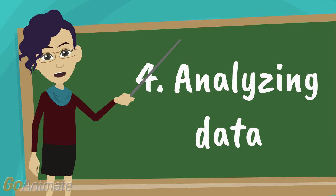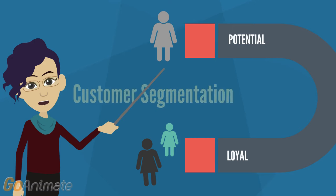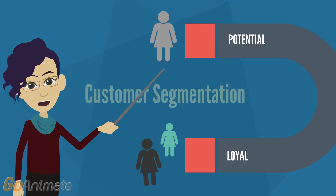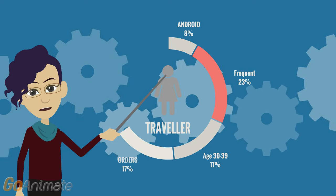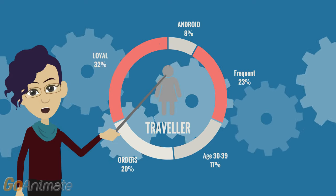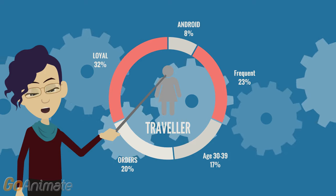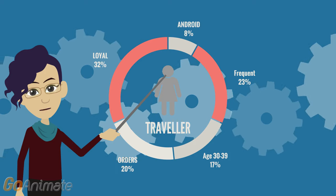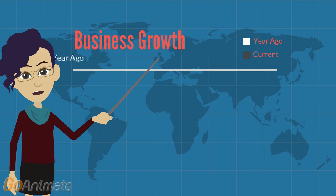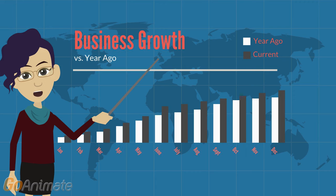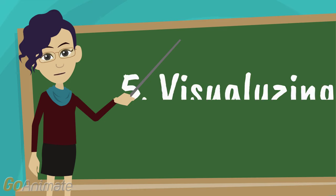After this we come to our fourth step: analyzing data. Using logical methods and analytical techniques, he segmented customers into different groups. Then, further applying some logic, he segmented the potential customers so as to market them on different bases, and also comparing the sales with last year so as to take future business decisions on the basis of historical data.